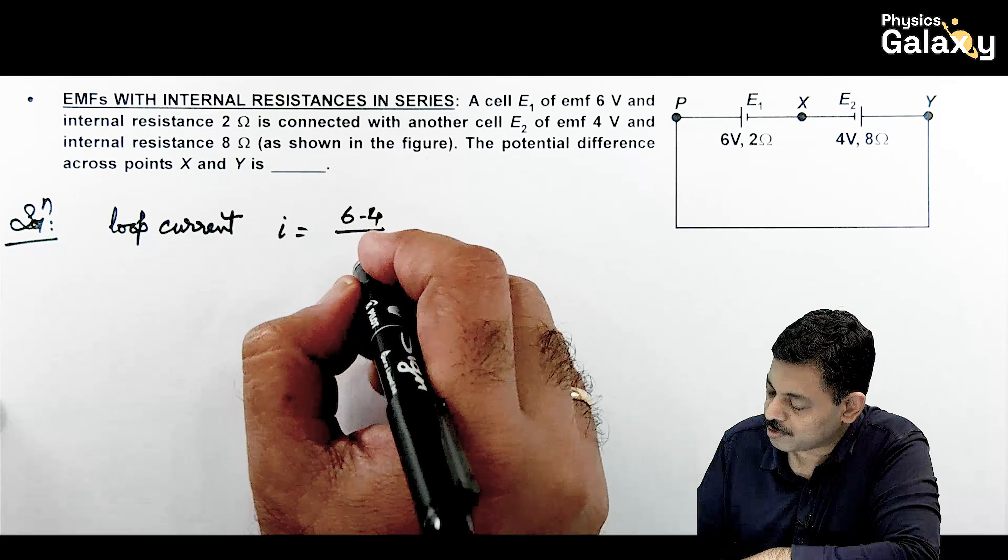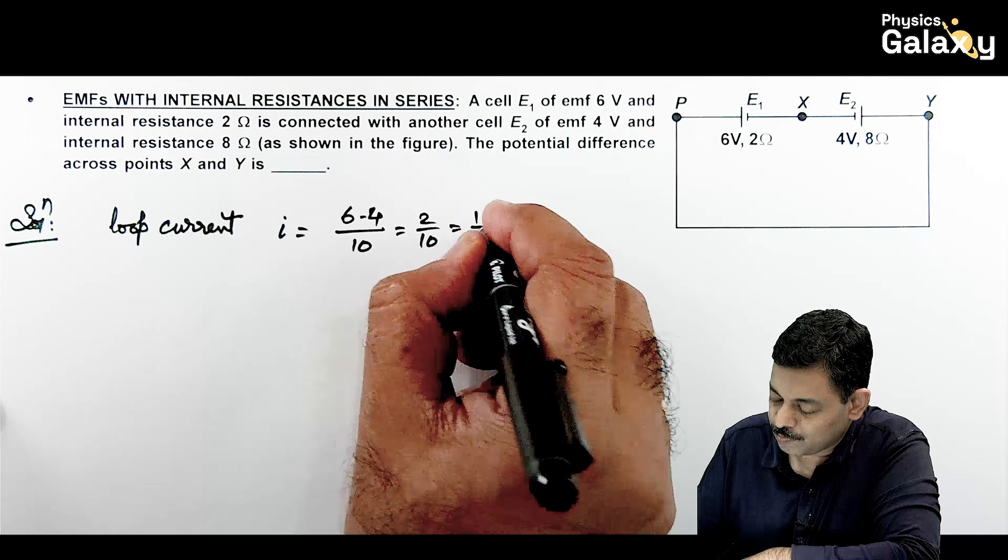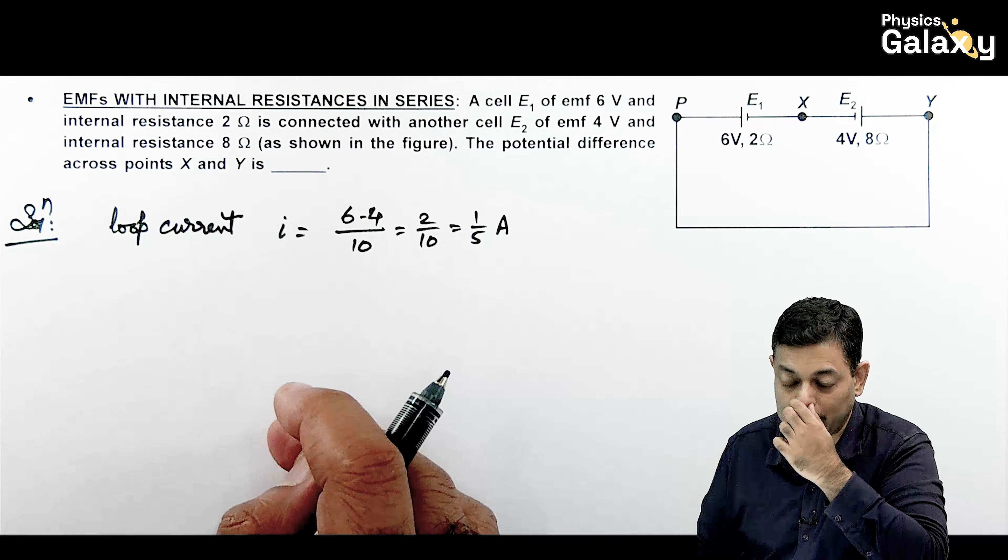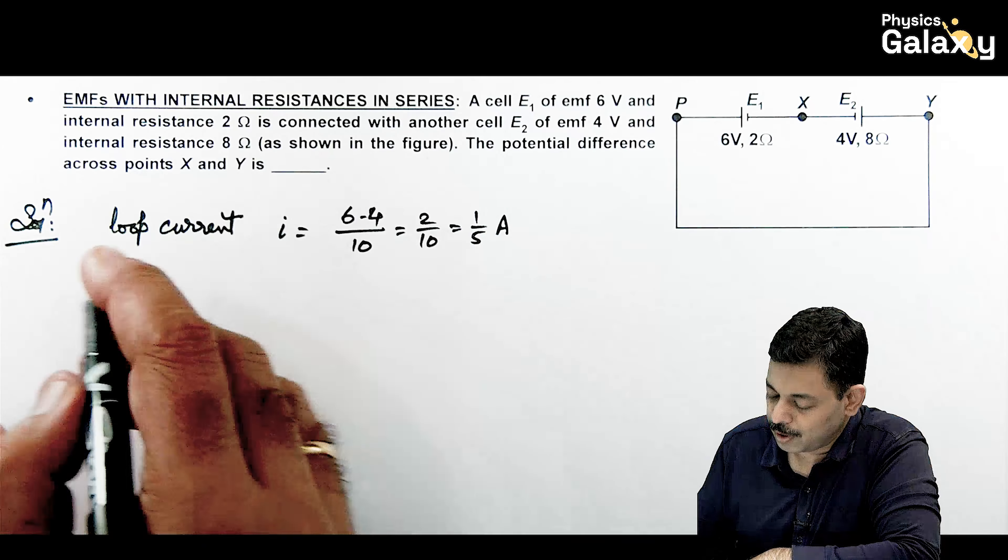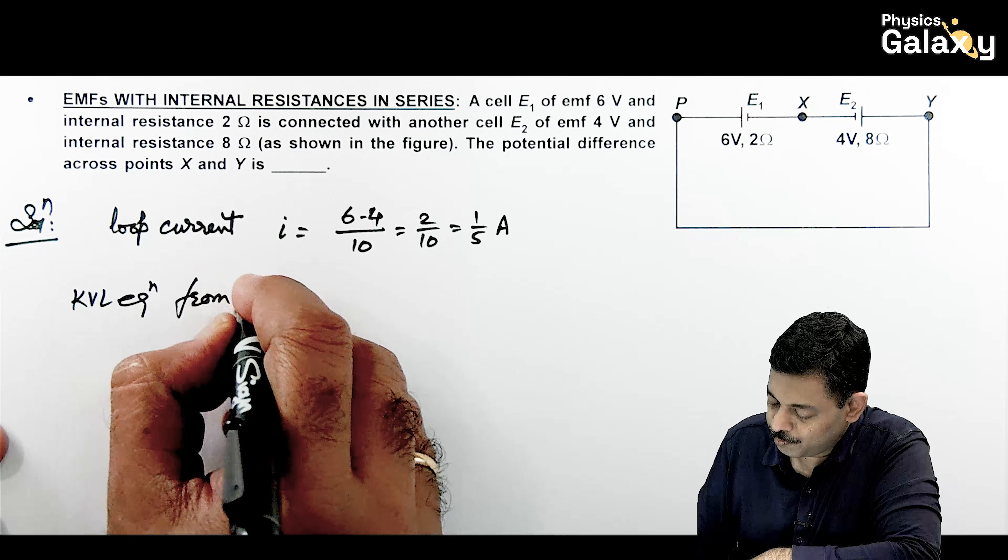If we calculate the loop current here, current can be given as 6 minus 4 divided by total resistance 2 plus 8, which is 10. So it comes out to be 2 by 10 or 1 by 5 amperes. That is the current flowing in the circuit in anticlockwise manner.